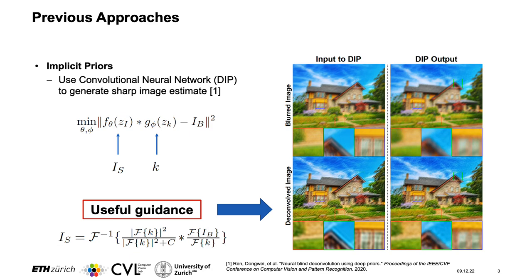In the figure to the right, we see that in the top row, the image DIP is asked to reconstruct is the blurred image, and to the right we see that it reconstructs a blurry image as well. However, what if we deconvolve the blurry image with a kernel estimate? This kernel estimate does not have to be perfect — in the bottom left we see the image does look sharper, however it also has high frequency artifacts. If we ask DIP to reconstruct this image, we see in the bottom right corner that it reconstructs the image with sharp edges, while the high frequency artifacts are suppressed. Thus this is a useful guidance for blind image deconvolution.